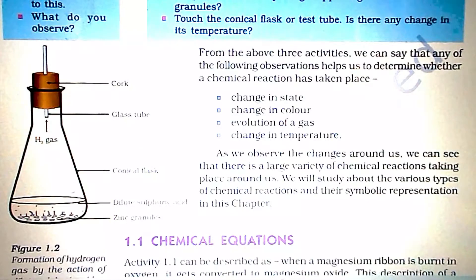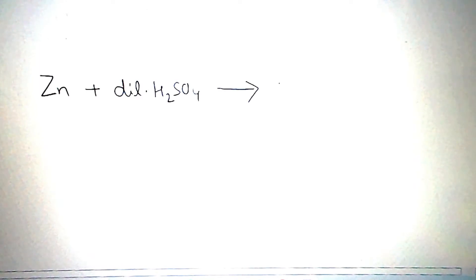In this reaction, when zinc granules react with dilute sulfuric acid, a large amount of hydrogen gas is evolved. Zinc granules plus dilute sulfuric acid (H2SO4) gives ZnSO4 plus H2. In this reaction, hydrogen gas is evolved.